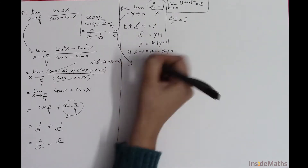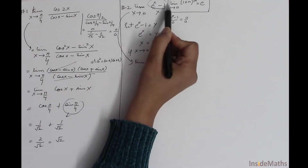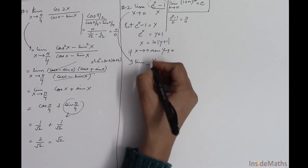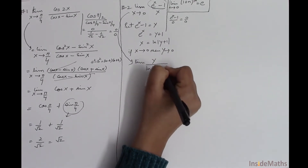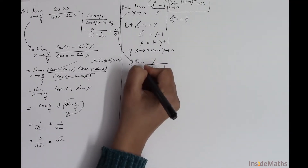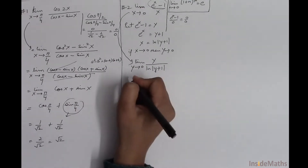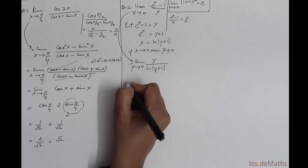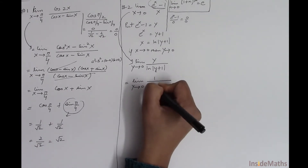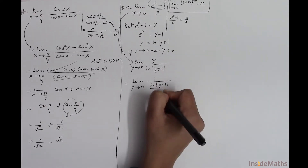I'll convert the whole function into y. So (eˣ - 1) becomes y, and x becomes log(y + 1), with the limit as y approaches 0. I need to solve the expression: limit as y approaches 0 of 1 over log(y + 1) over y, which is 1 over log(y + 1)^(1/y).